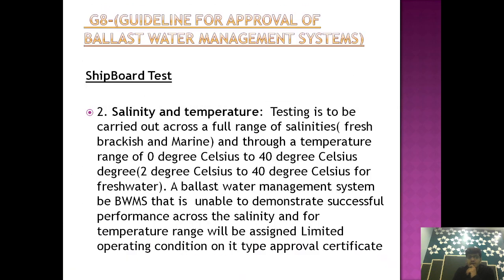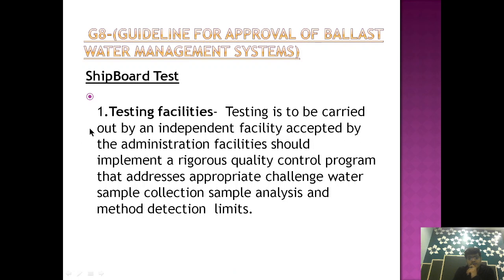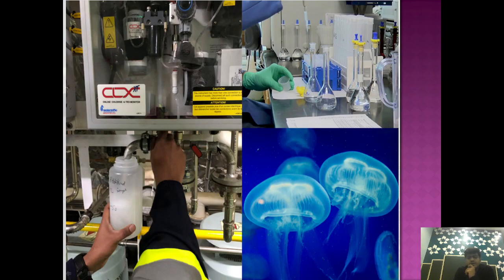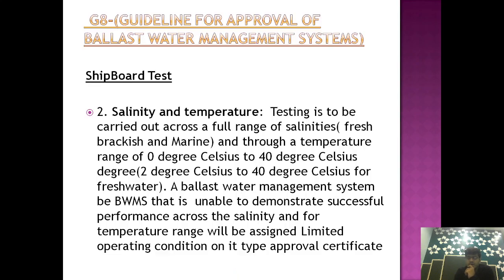The first part of the SHIPBOARD test is the testing facility. Testing is to be carried out by an independent facility accepted by the administration. The facility should implement a rigorous quality control program that addresses appropriate challenge water, sample collection, sample analysis, and method detection limits. Basically, we are taking the sample which has been treated, and that sample is analyzed for the different type of standards set by IMO, that is the D2 standard.